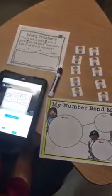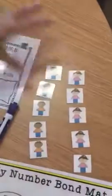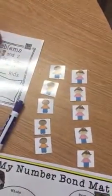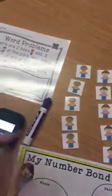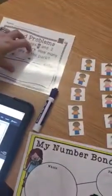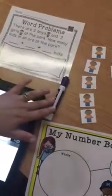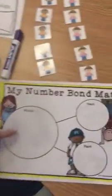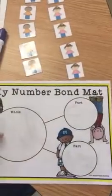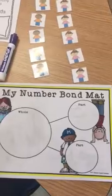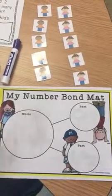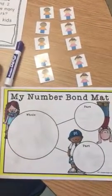So these are all the materials you're going to need. You're going to need your word problem with all of the pieces — this should all be together, I just took them out of the bag so you can see everything. You're going to need a dry erase marker, your number bond mat if your teacher has one — if not, it's okay too. If you want to use it you can, and then your iPad.